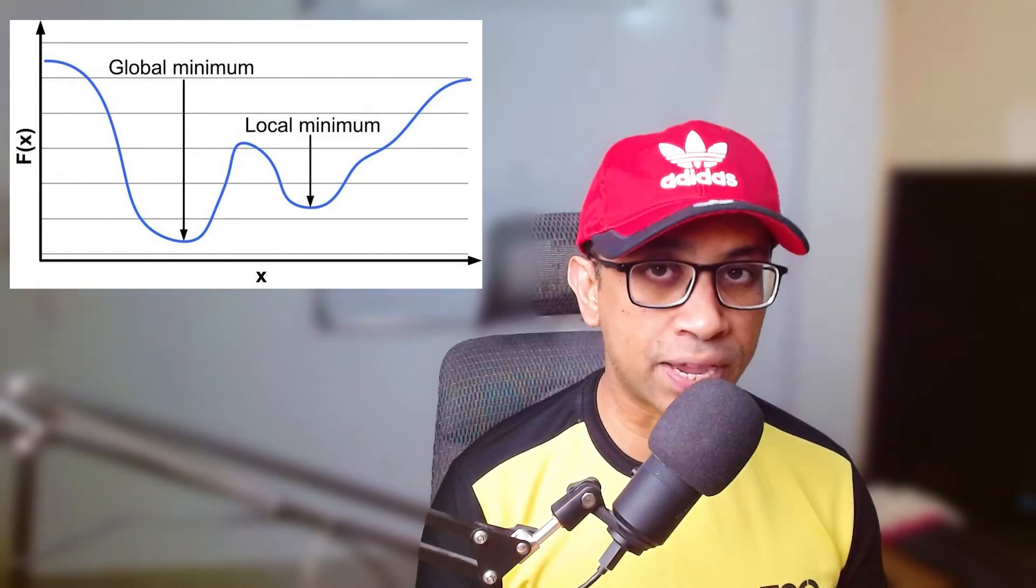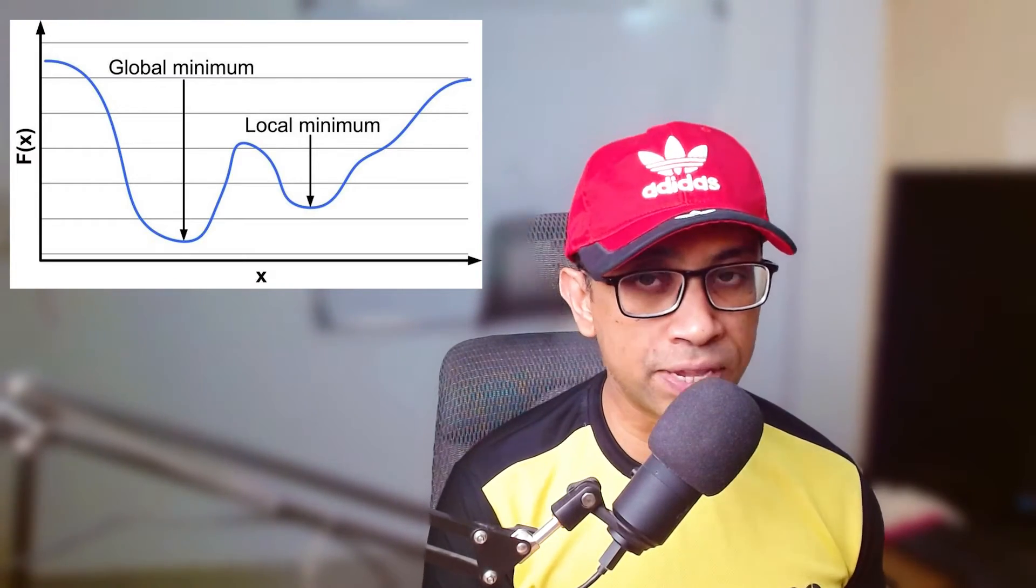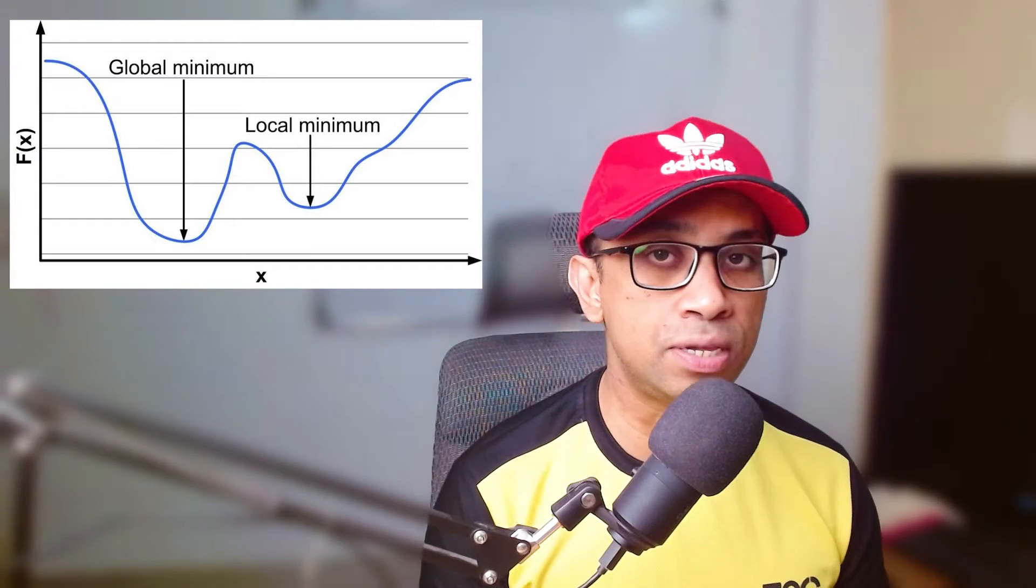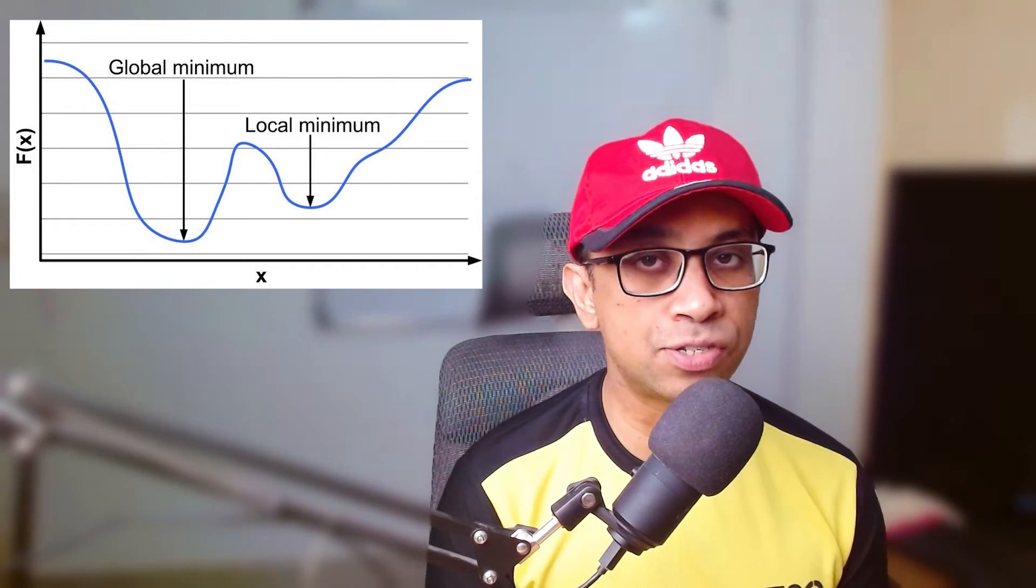If the function is convex, this will be a global minimum. But if the function is not convex, then you cannot guarantee the global optima. It could be a local minimum or even a saddle point.